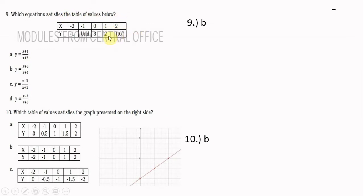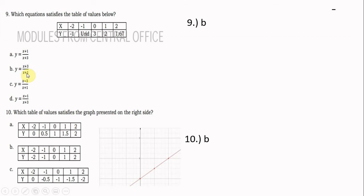Number 9: which equation satisfies the table of values below? Substituting x = 0 gives y = 3, and substituting x = negative 1 gives undefined, since negative 1 plus 1 equals 0 in the denominator. This narrows the answer to letter B or C. Testing x = 0 in option B: (0 plus 3) over (0 plus 1) equals 3 over 1, which is 3. So the answer is letter B.